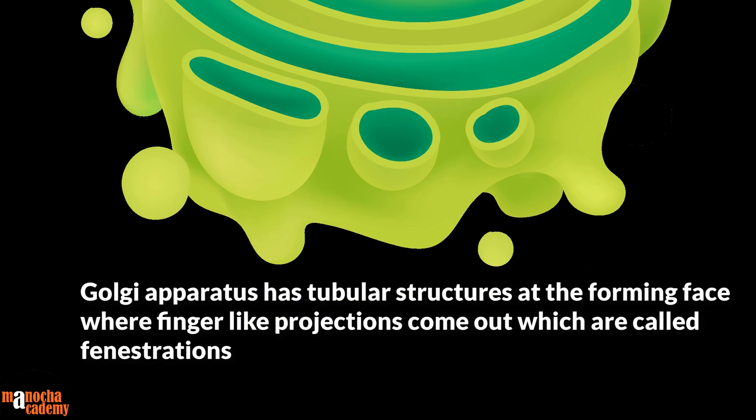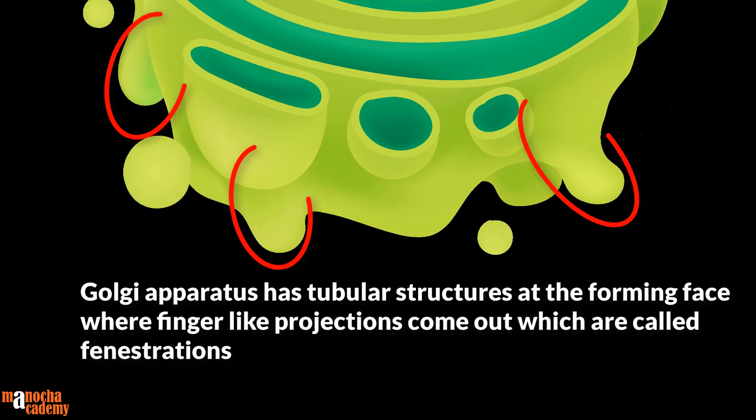The Golgi apparatus can also have tubular structures like the endoplasmic reticulum. These are usually present in the forming phase, where finger-like projections come out which are known as fenestrations.